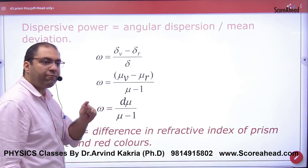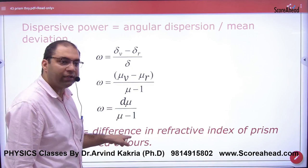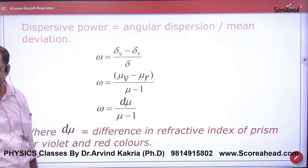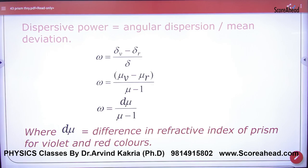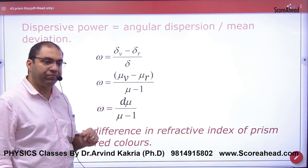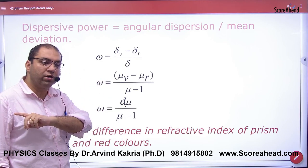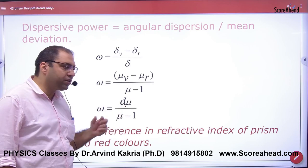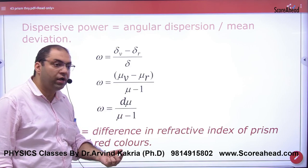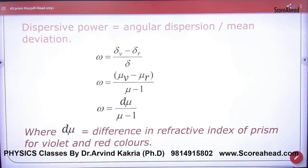If you remember lens, same formula: δμ by μ minus 1. Prism and lens dispersive power are the same. This δμ is the difference of μ violet and μ average. μ yellow.